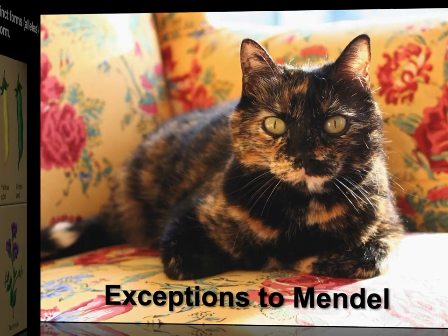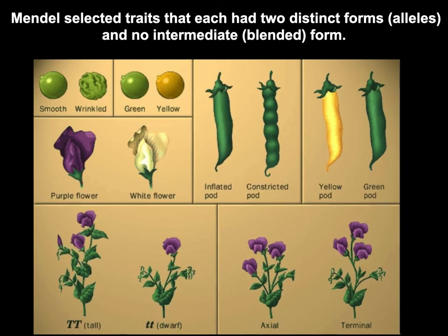Just as a refresher, here's the kind of stuff Mendel was looking at. For every characteristic he looked at in his peas, there were two possibilities. A pea could either be inflated pod or constricted pod, yellow pod or green pod. Flowers could be axial or terminal. The plants could be tall or dwarf. The flowers were either purple or white. The seeds were either smooth or wrinkled, or green or yellow. There wasn't a third, fourth, or fifth possibility. In other types of genetics, there are.